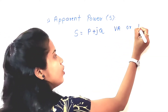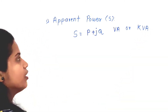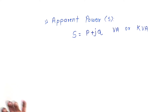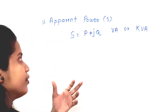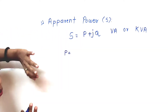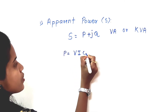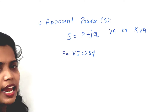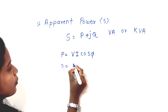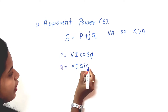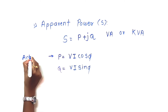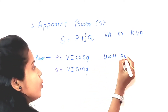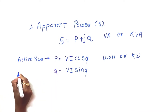Active power P is the active component of total power: P = VI·cosφ. Reactive power Q is the reactive component: Q = VI·sinφ. P is called active power and its unit is watt or kilowatt. Reactive power Q has the unit VAR (volt-ampere reactive) or kVAR (kilo volt-ampere reactive).